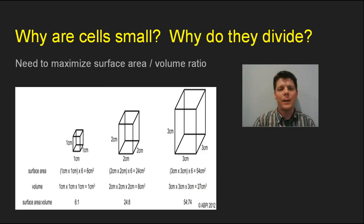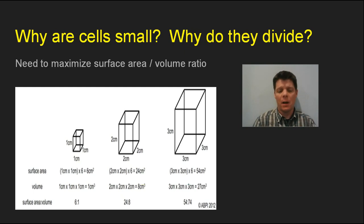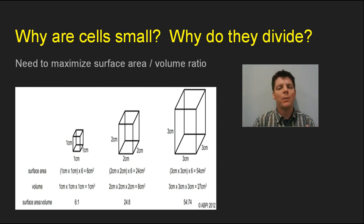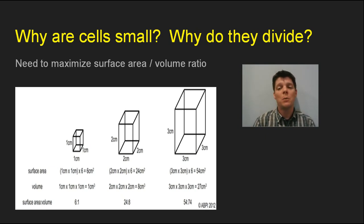The next concept is why cells are small — why do they need to divide? We need to understand the relationship of surface area to volume. Looking at this model cell, there's quite a bit of surface area — areas that are exposed. In a cell, this is the membrane, which is really important: it determines what passes into and out of the cell, regulating the movement of nutrients in and wastes like carbon dioxide out during cellular respiration.